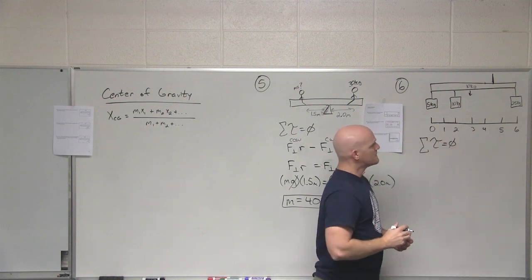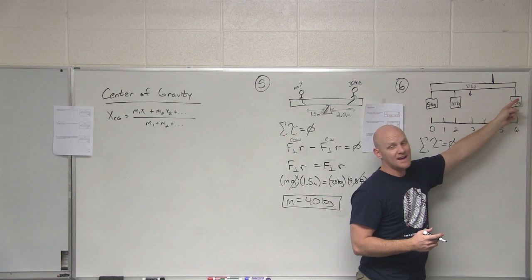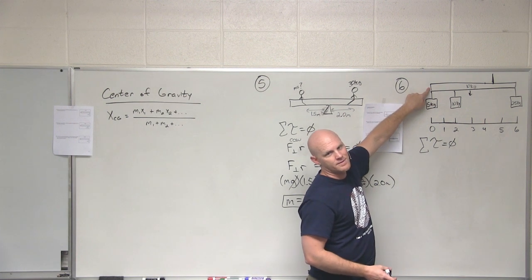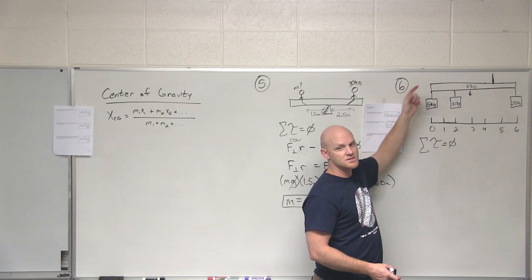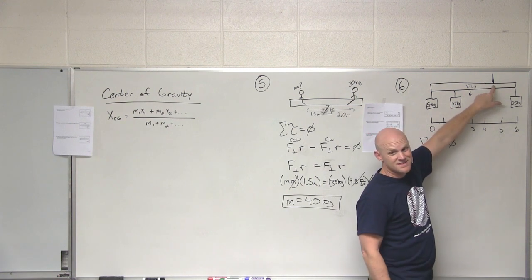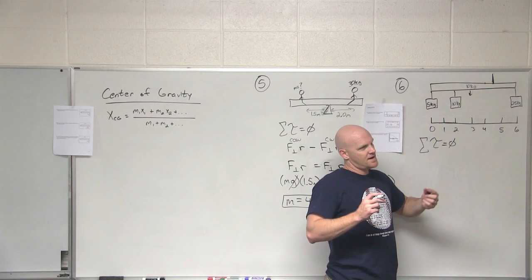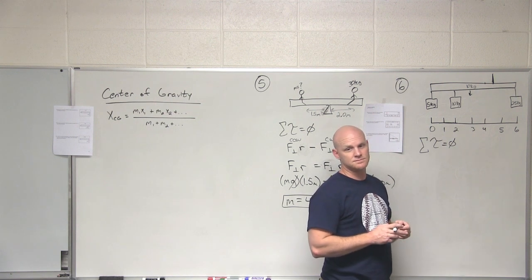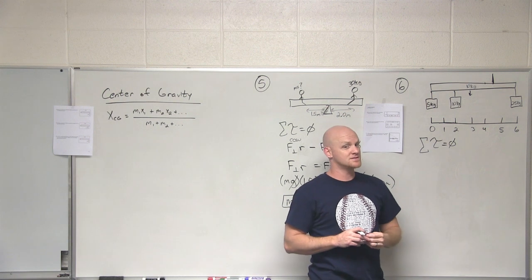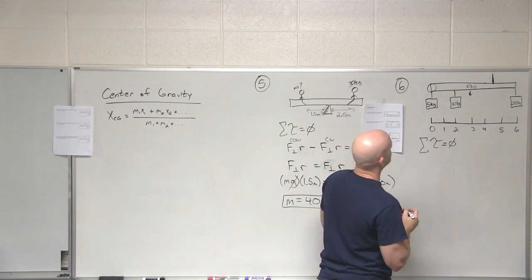Starting with equilibrium condition one: sum of torques equals zero. I could choose any arbitrary axis of rotation and the problem still works out. I'll pick the axis at one of the masses so that mass has a lever arm distance of zero. Let's place the axis of rotation right at the 5-kilogram mass at position zero.